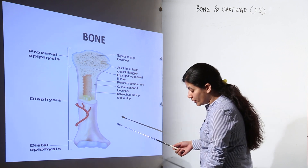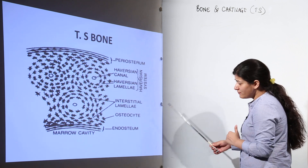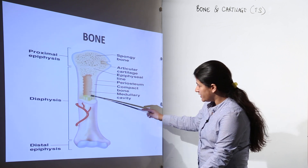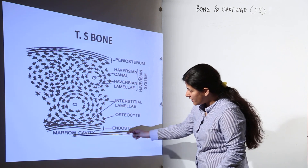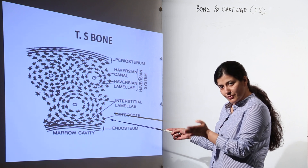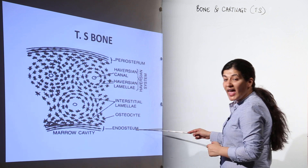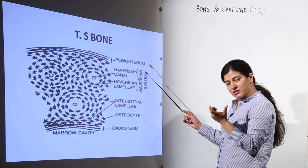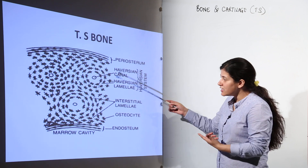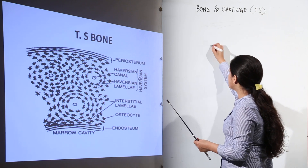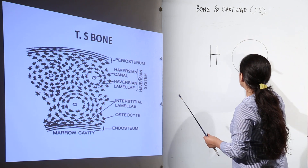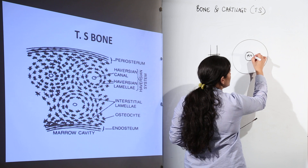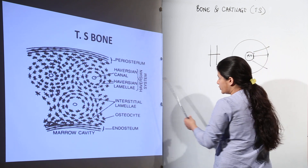Looking at the transverse section, we have the medullary cavity, and inside it there is bone marrow. The lining that separates the medullary cavity from the compact bone is known as the endosteum. Just as we have the periosteum as the outer outline of the bone, the endosteum is the outline of the medullary cavity. So in the transverse section: this outer layer is periosteum, inside is endosteum, and inside that is the medullary cavity containing bone marrow.